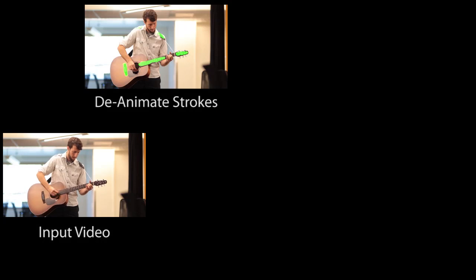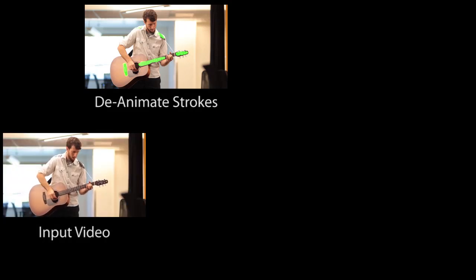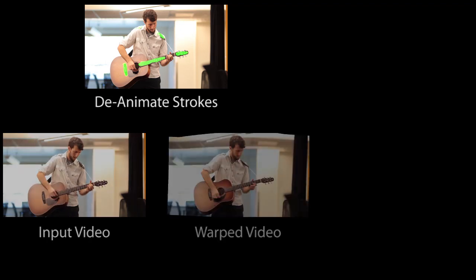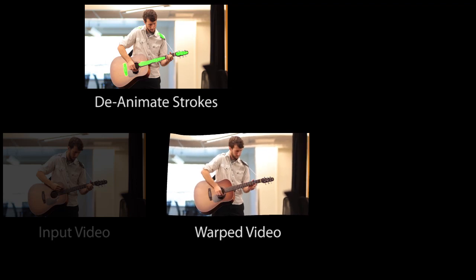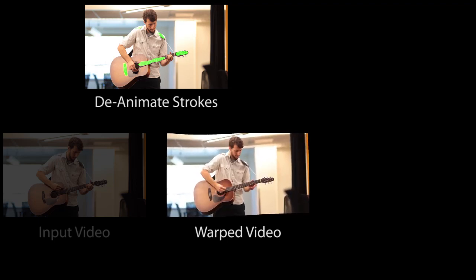Our method takes a video as input. The user then draws green strokes on the regions whose motion she wishes to remove. Our method uses these strokes to select tracks and guide a spatially varying warp that removes the motion of the indicated regions. The guitar no longer moves in the warped video.